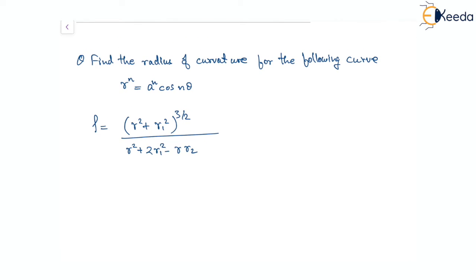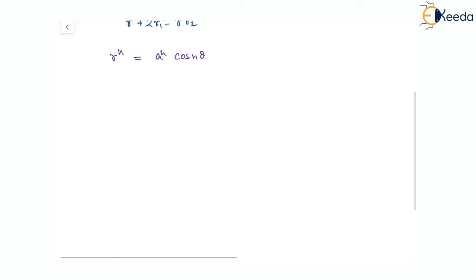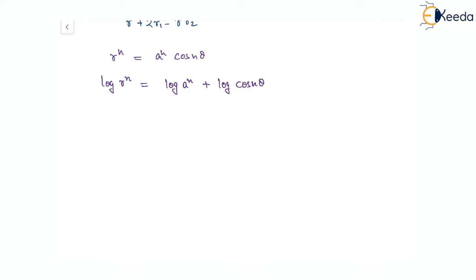Let us find r1 and r2 first. The polar equation given is r to the power n equal to e to the power of n times cos(n theta). Taking log on both sides, we get log of r to the power n equals log of e to the power n plus log of cos(n theta). Using the power rule, this becomes n times log r equal to log of e to the power n, which is a constant, plus log of cos(n theta).